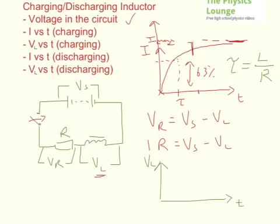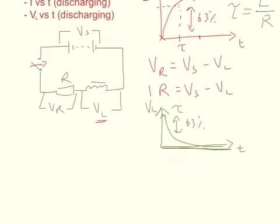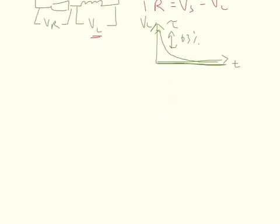What happens to VL? Initially it has to be maximum, because that's when the maximum change is occurring — going from zero to something. Then it drops down to nothing, hitting the asymptote at the bottom. It doesn't go below zero. Again, a drop of 63% per one time constant.